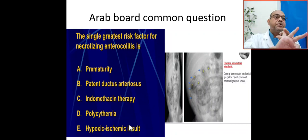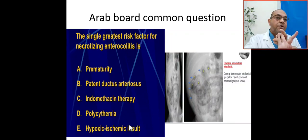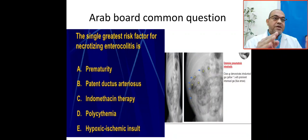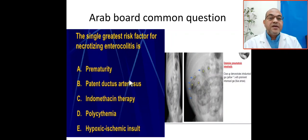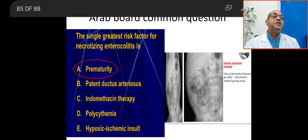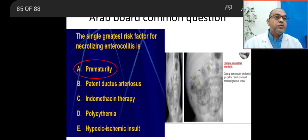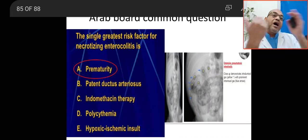The single greatest risk factor for necrotizing enterocolitis is prematurity. This is the most important risk factor. Then the other risk factors include premature formula or formula feeds, and ischemic gut — such as perinatal asphyxia, PDA, and polycythemia. But the single greatest risk factor is prematurity.